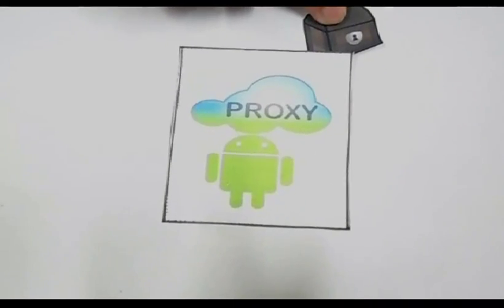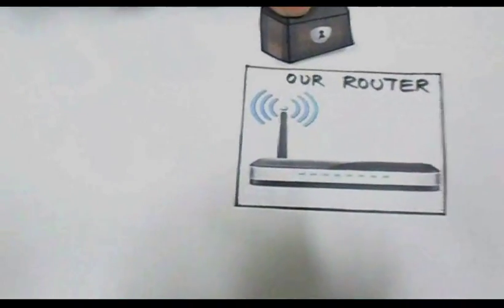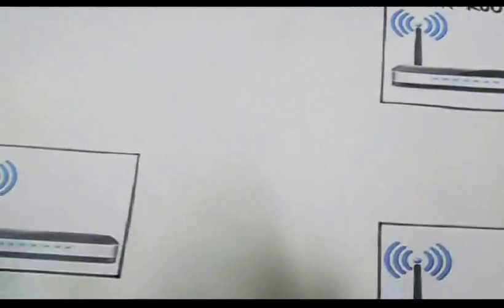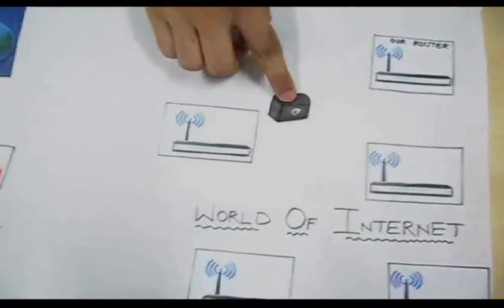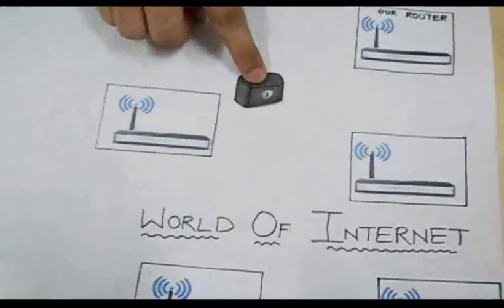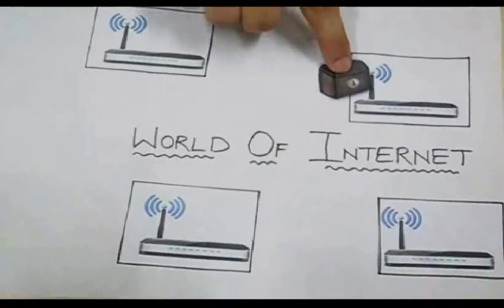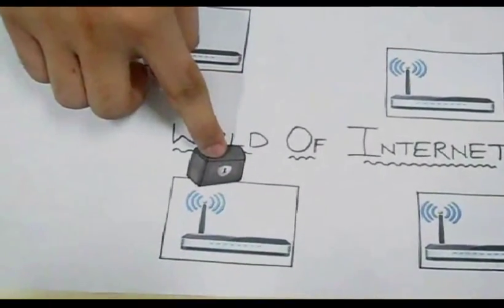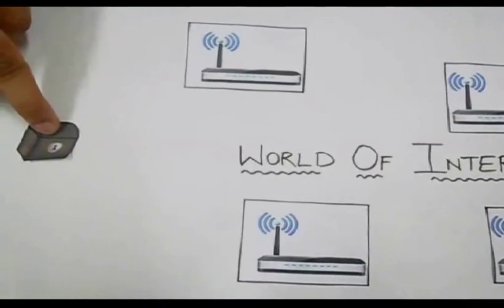The data packet then goes to a router. From our router, the data packet enters the world of the internet. In the world of the internet, the data packet goes from one router to another until it reaches its destination through a specified gateway.